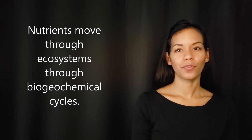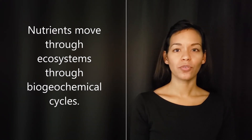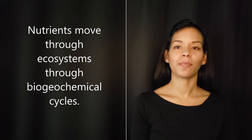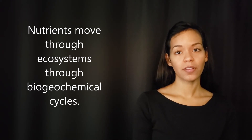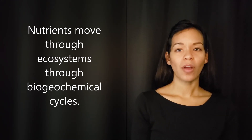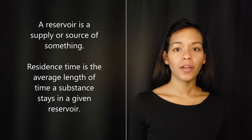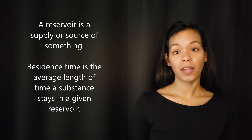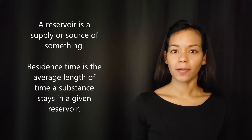Elements move through ecosystems in nutrient cycles, also known as biogeochemical cycles. Elements and molecules travel through the atmosphere, hydrosphere, lithosphere, and biosphere in dynamic equilibrium. Nutrients move from one reservoir or pool to another for varying amounts of time, and this is called residence time.